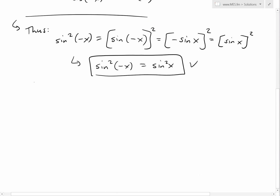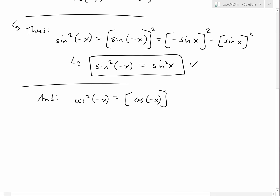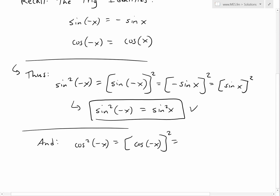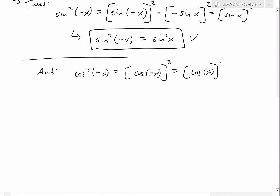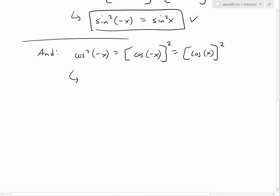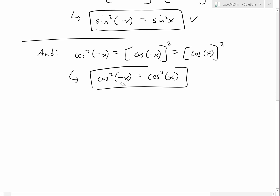Now the second proof. We have cosine squared of negative x, which we write as cosine of negative x, all squared. Plugging in the identity, cosine of negative x just equals cosine of x — it already carries a positive sign. So this equals cosine of x, all squared. Writing it in the more common notation, with the square exponent moved up, gives us cosine squared of x. There is the second identity.